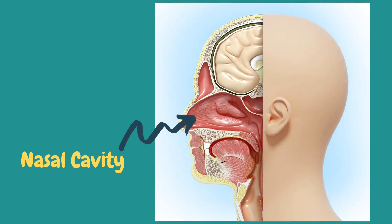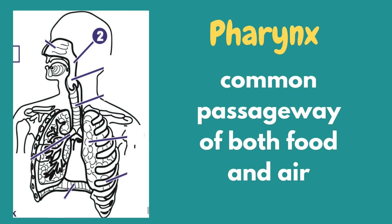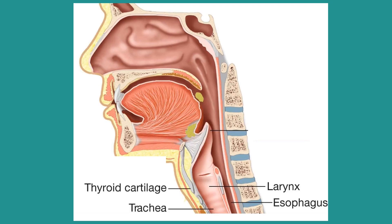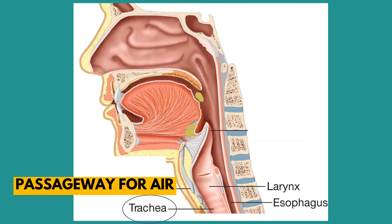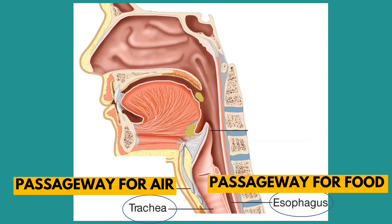Here is the location of the nasal cavity. To proceed, the pharynx is the common passageway of both food and air. Using this diagram, we can see that the trachea and esophagus comprise the pharynx. The trachea is the passageway of air that we breathe after the nasal cavity, while the esophagus, which is part of the digestive system, serves as the passageway for food.